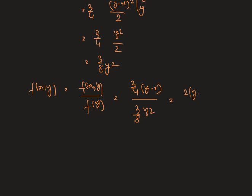Hence, we get 2 into y minus x divided by y square where x is less than y but greater than 0. Now f of x given y equals to 1 is 2 into 1 minus x where x is 0 to 1.